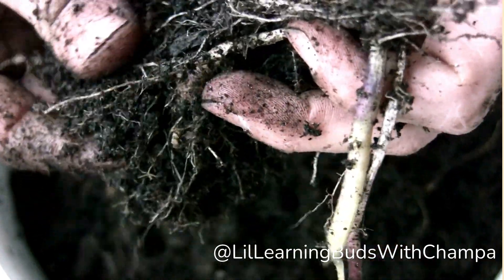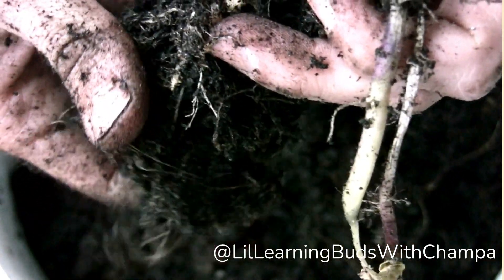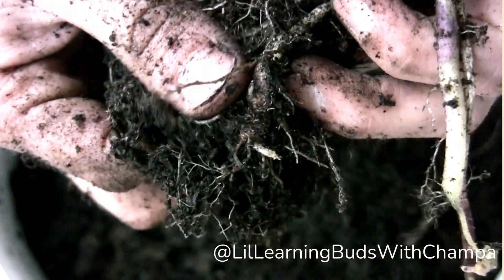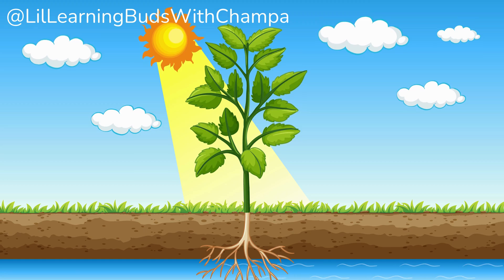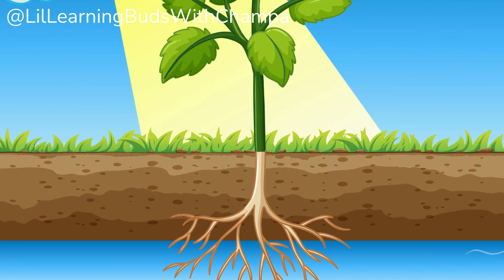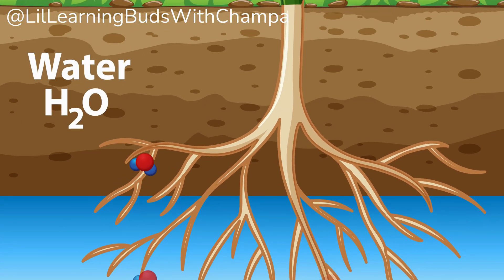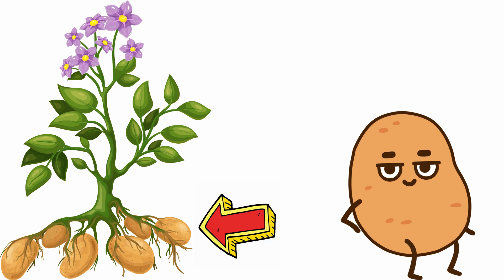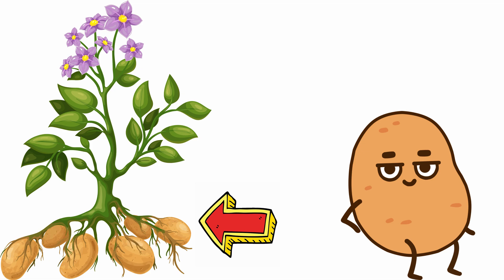The main functions of roots are: to anchor the plant in the soil — meaning roots hold the plant steady so it doesn't fall over; to absorb water and nutrients from the soil and pass them on to the plant; and to store food. Some plants store extra food in their roots, like a pantry, for the plant to use later when it needs energy.